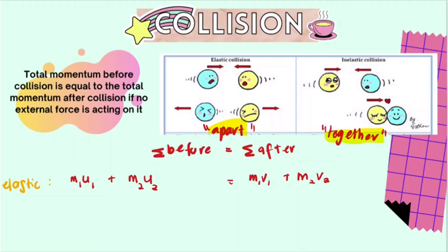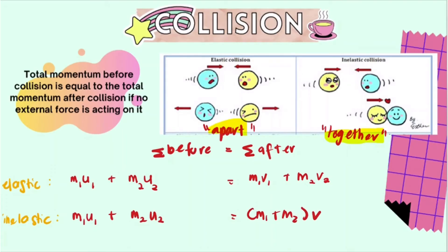For an inelastic collision it is a bit different. Before the collision, we have the momentum of the first object (mass times initial velocity of object one) plus the momentum of the second object (mass of the second object times its initial velocity). However, for the after portion, since the objects move together and have the same common velocity, we can simplify the equation. There is no need to separate the two momenta — we just write (m1 + m2)v. Please memorize these two general formulas and use them accordingly.